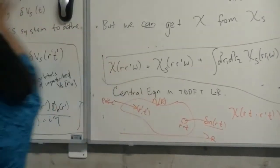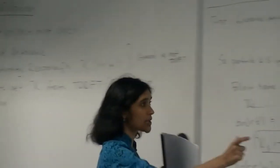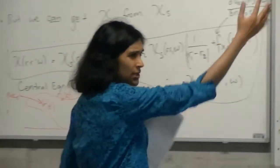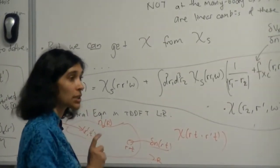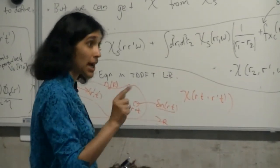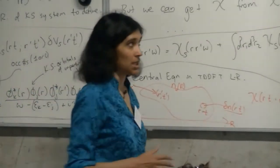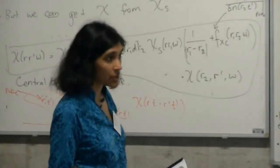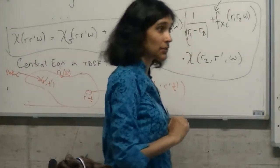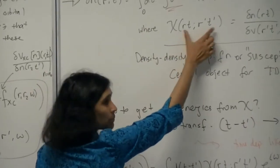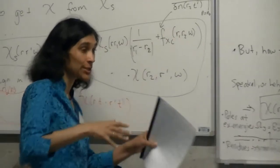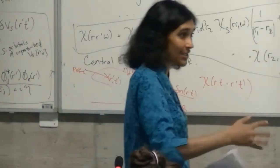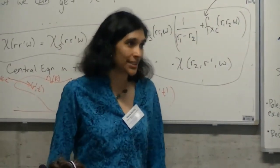Why do we say linear response and not just response theory? Remember when we started, we wrote out the wave function and only picked the term that went as delta v times psi — I had plus order delta v squared. That's where the 'linear' comes in: we're only looking at the response which goes linearly with the delta v. You can also define quadratic response, higher-order response, and get hyperpolarizabilities and all this stuff from TDDFT, with functions of four or more arguments and more frequencies.